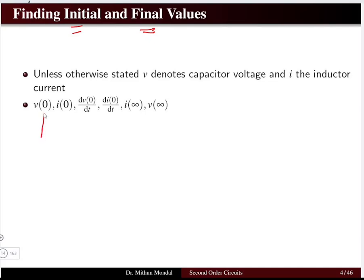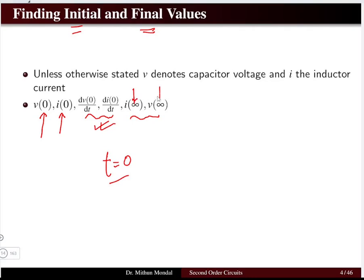V(0) indicates the voltage at the initial condition — where zero means the switching instant. I(0) means the current at the initial condition. For second order circuits we also have the differential terms dV/dt and dI/dt at the zero condition. In the first order circuit we did not have these derivative terms, but for second order we will need dV/dt or dI/dt as initial conditions. Similarly, the final values i(∞) and V(∞) are required to solve the boundary condition.